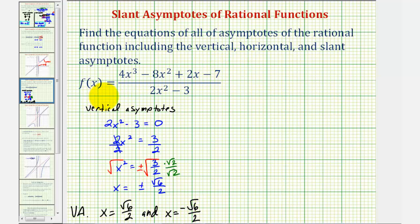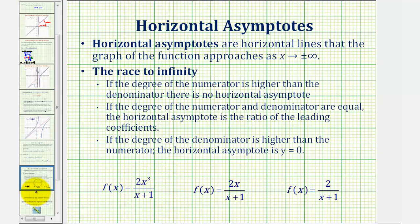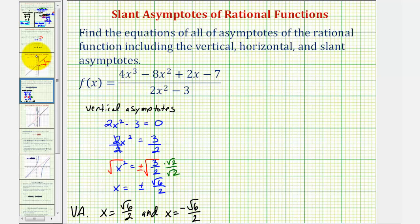Next, we can determine the horizontal asymptote by analyzing the degree of the numerator and denominator. In this case, the degree of the numerator is three and the degree of the denominator is two. If the degree of the numerator is greater than the degree of the denominator, we do not have a horizontal asymptote. If the degrees are equal, the horizontal asymptote is the ratio of the leading coefficients. If the denominator's degree is greater, the horizontal asymptote is y equals zero. So in our case, we don't have a horizontal asymptote.